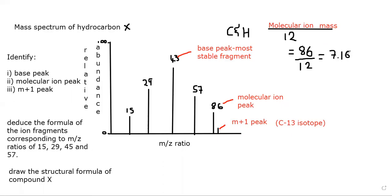When you do this, whatever decimal you get, just ignore it — do not write it. So if it's 7.9, just ignore the decimal. We're not rounding up or down, just ignore the decimal. So 86 over 12 is 7. Once you get that answer, subtract 1 from it, which leaves you with 6. That is the number of carbon atoms in our compound.